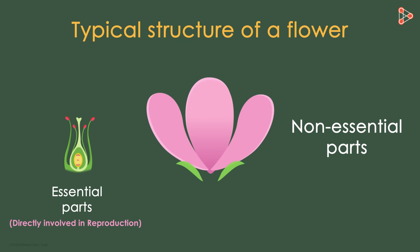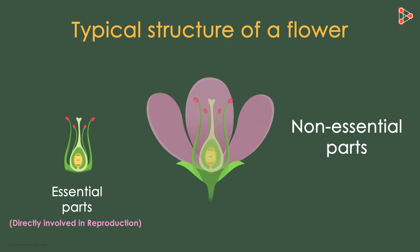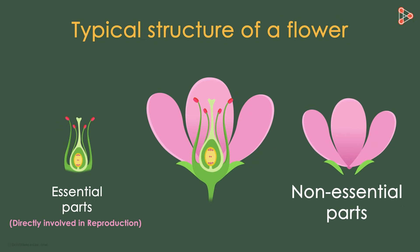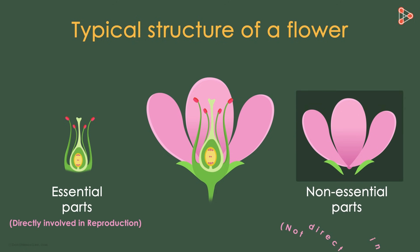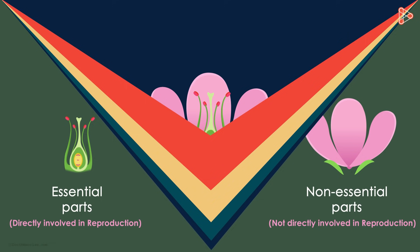Floral parts such as the petals and sepals are next on our list, and they are the nonessential parts of a flower. These floral parts do not take part in the process of reproduction directly and are therefore called the nonessential parts. Now let's discuss each part in detail.